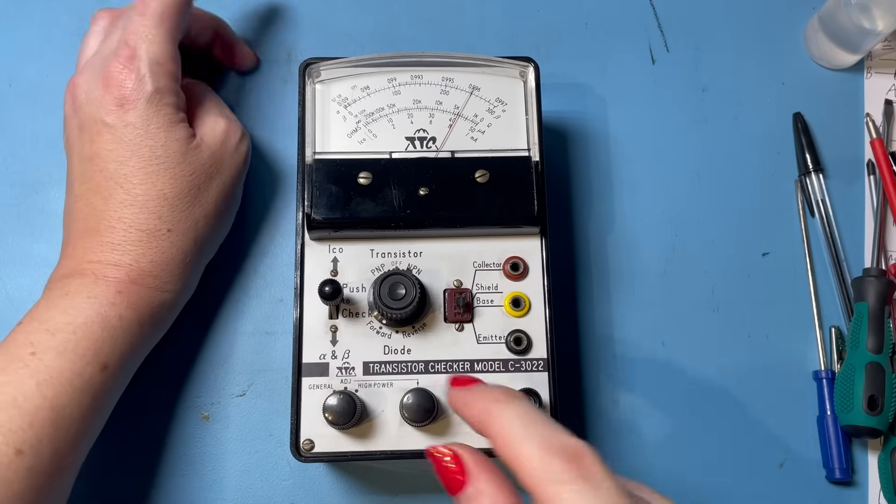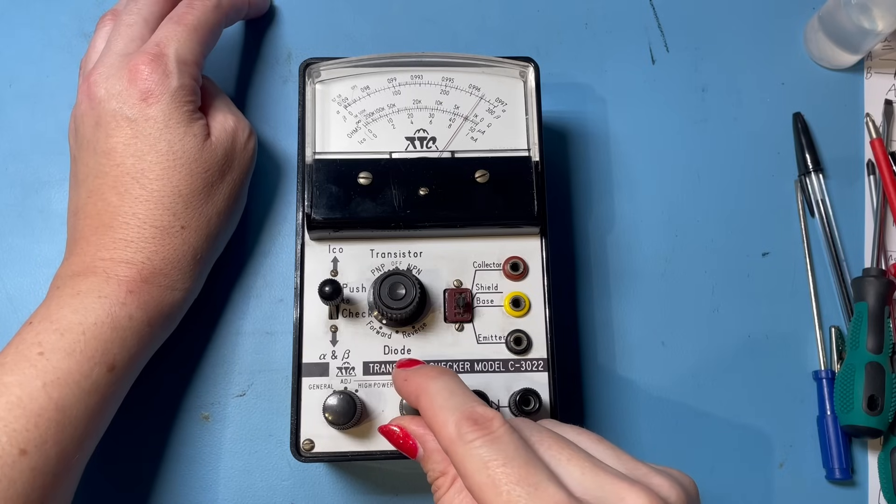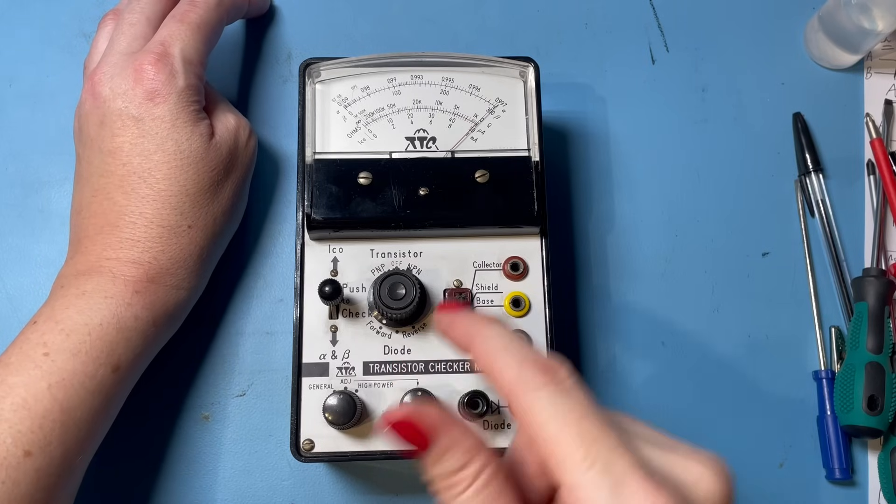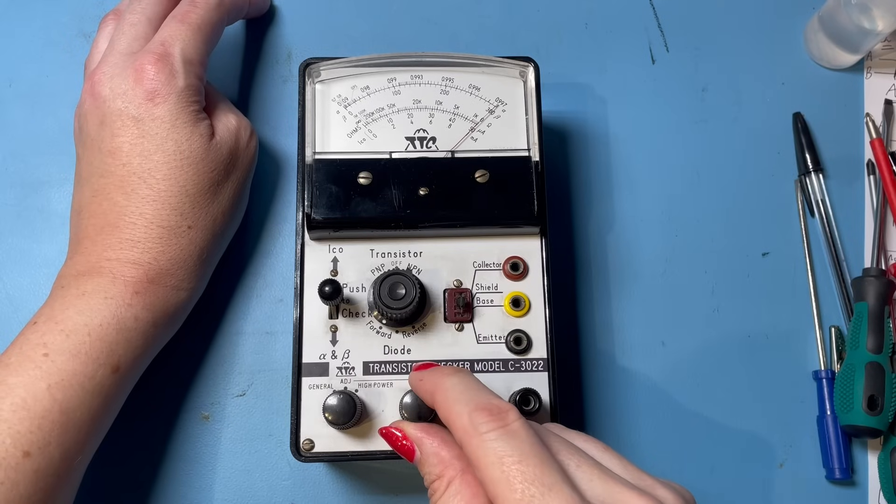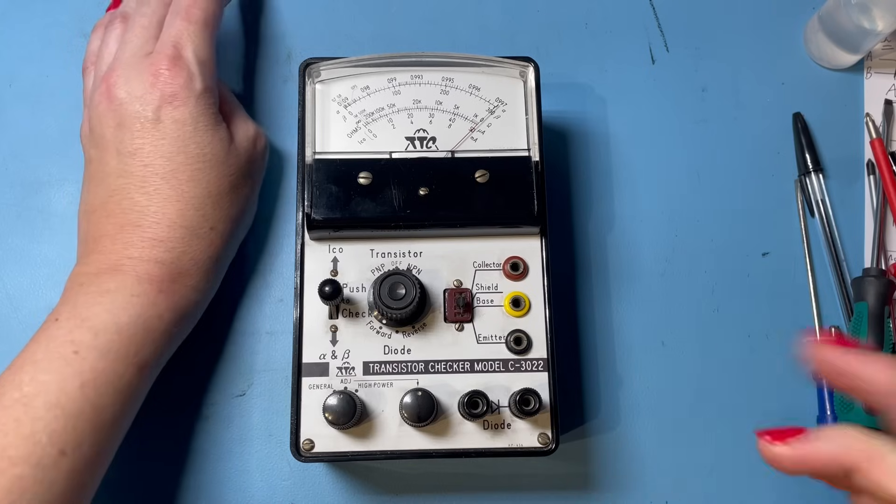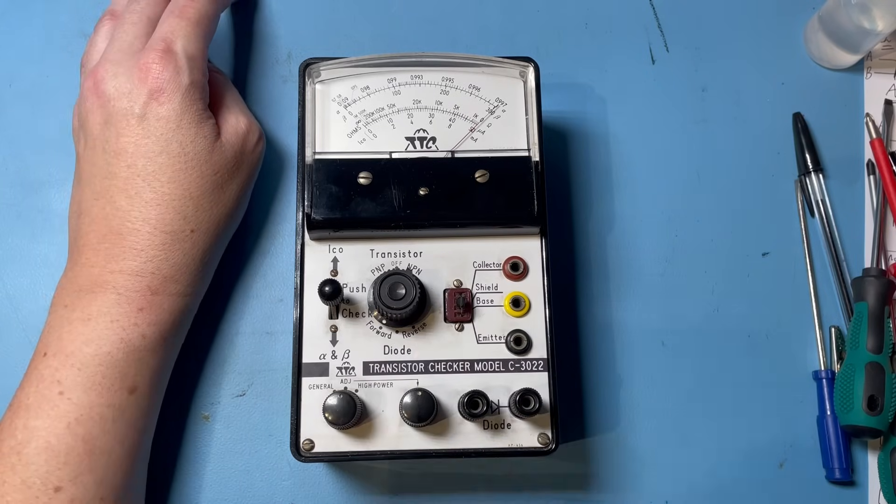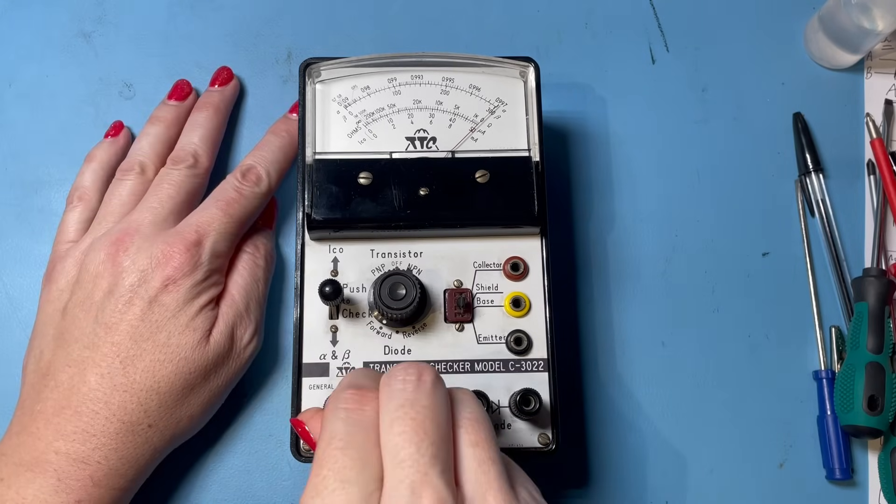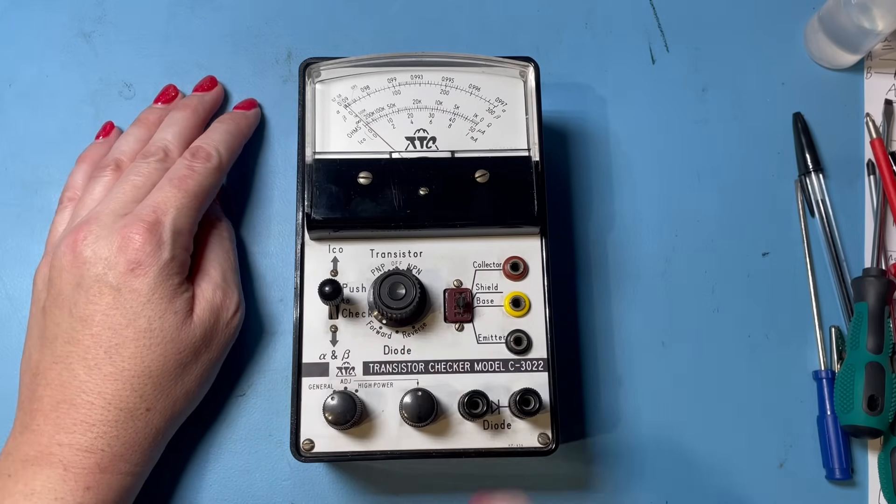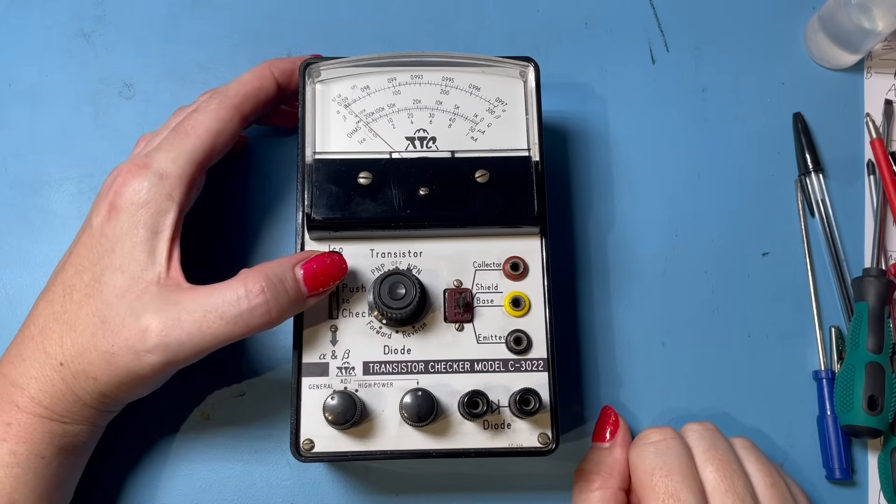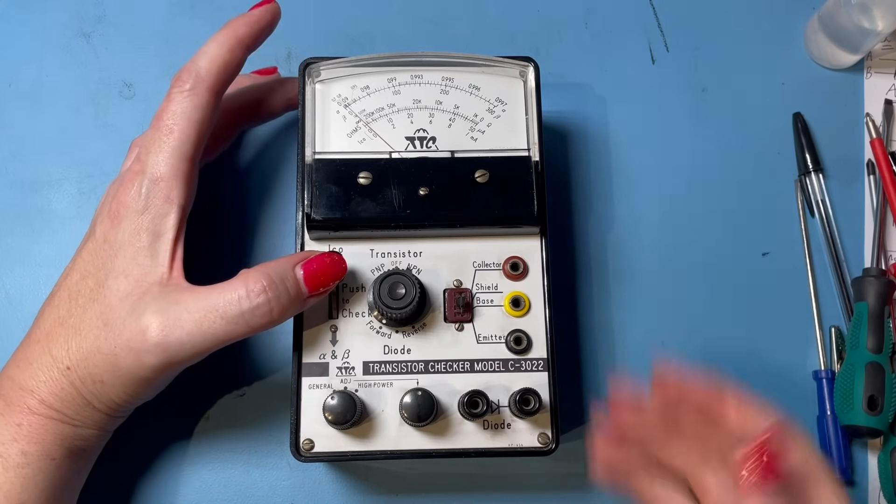Here we go. Now we want to get the needle apparently to 300 on the alpha beta scale. There you go. Roughly. Okay, now we are... this is a general purpose NPN transistor. So we turn this to general. If you're doing a power transistor, you turn it to higher power. Press this up to check the leakage. No leakage.